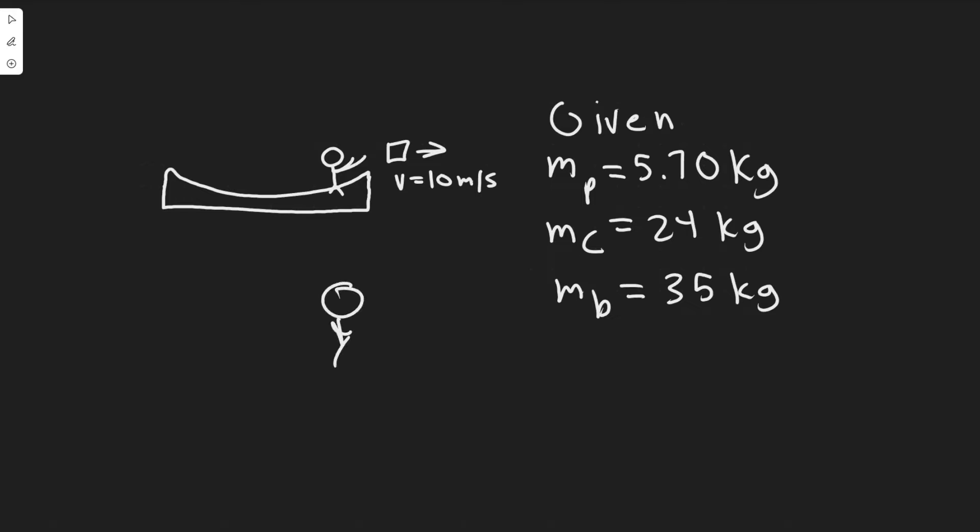You should know that if you throw something this way there's going to be, you're going to travel this way. So that's just the general idea. We know that by throwing this he's going to travel in the opposite direction at some speed we don't know. That's what we're going to solve for.